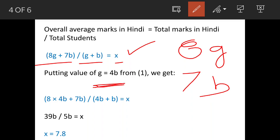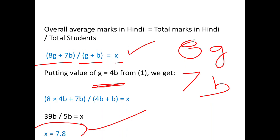To get the value of x, we'll put g = 4b as we found before. When we substitute g = 4b, we get (8×4b + 7b) / (4b + b) = 39b / 5b = x = 7.8.